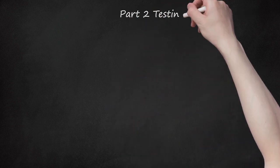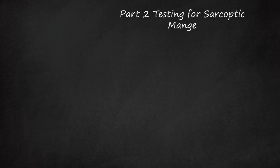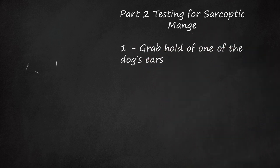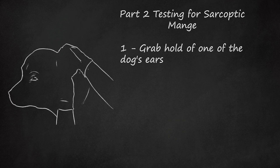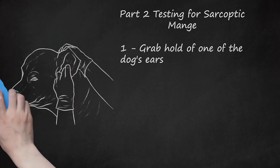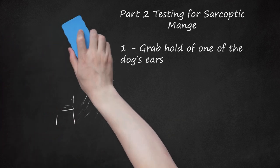Testing for Sarcoptic Mange. If your dog appears to be itching itself more than normal, but you're unsure whether it has sarcoptic mange, this simple test can help. Take one of your dog's ears gently in your hand and hold the loose, floppy part of the ear between your thumb and index finger. If you're worried about the possibility of getting bitten by your dog's mange-causing mites, you may want to wear disposable gloves for this test.